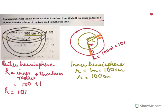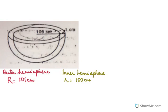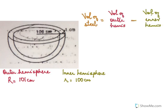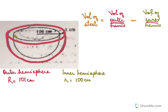Now we are ready. The volume of the steel sheet equals outer volume minus inner volume. The outer radius is 101 and the inner radius is 100. Volume of steel = volume of outer hemisphere minus volume of inner hemisphere. What we're left with will be the volume of this steel that we need to find.